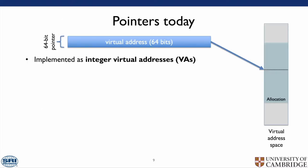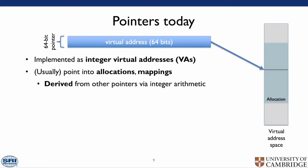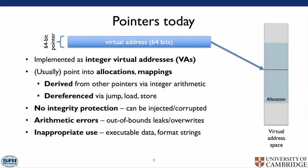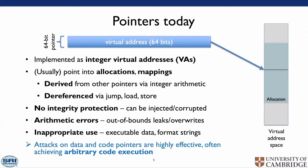Pointers today are implemented as integer virtual addresses, usually pointing to allocations and mappings. They are derived from other pointers via integer arithmetic and referenced by jumps, loads, and stores. There is no integrity protection — they can be injected or corrupted. Arithmetic errors such as out-of-bounds reads and overwrites are possible. Inappropriate use, for example executable data and format strings, is easy. Attacks on data and code pointers are highly effective, often achieving arbitrary code execution.